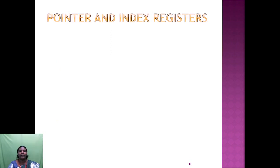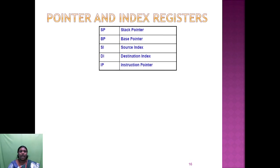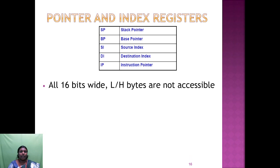The pointer and index registers are: stack pointer (SP), base pointer (BP), source index (SI), destination index (DI), and instruction pointer (IP). The instruction pointer is used as a control register. These registers are all 16-bit; their lower and higher bytes are not individually accessible — only the full 16-bit value can be accessed, unlike AX, BX, or CX.